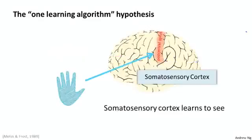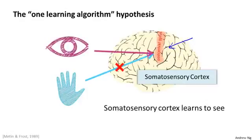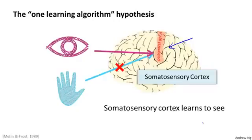Here's another example. That red piece of brain tissue is your somatosensory cortex — that's how you process your sense of touch. If you do a similar rewiring process, the somatosensory cortex will learn to see. Because of this and other similar experiments — called neural rewiring experiments — there's this sense that if the same piece of physical brain tissue can process sight, sound, or touch, then maybe there's one learning algorithm that can process sight, sound, or touch. Instead of needing to implement a thousand different algorithms, maybe we just need to figure out some approximation of the brain's learning algorithm and let it learn by itself.